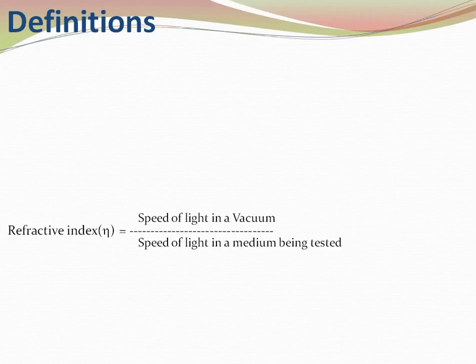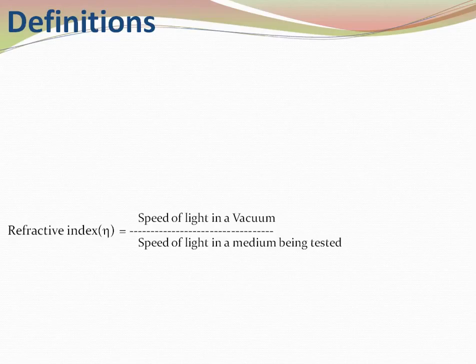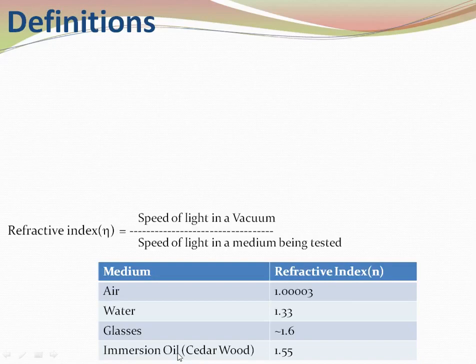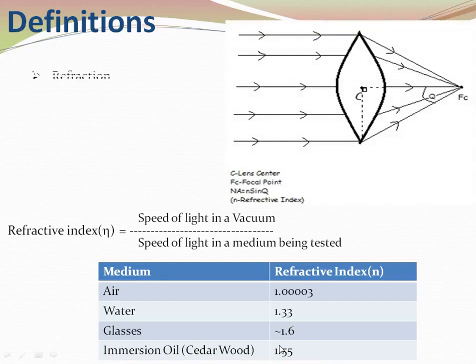Refractive index is the comparison between the speed of light in a vacuum and the speed of light in the medium being tested. Air is nearly 1, water is 1.33, glass is around 1.6, and cedar wood oil — the immersion oil we use in the microscope for higher magnification — is around 1.55, which is nearly equal to that of glass.